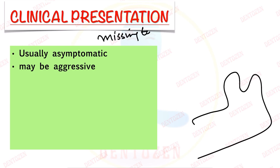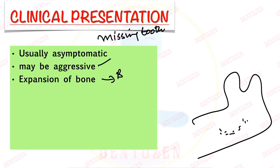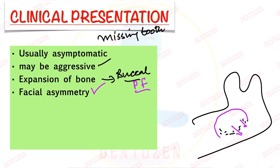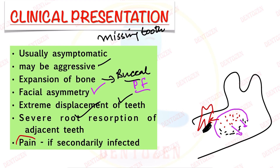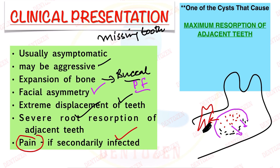Clinically it is usually asymptomatic. The patient comes with concern about a missing tooth, and the cyst is discovered on radiograph. However, it has the potential to become aggressive — it grows slowly, expands bone laterally, expands the buccal cortical plate, and can lead to pathological fracture. It can cause facial asymmetry, extreme displacement of adjacent teeth, and severe root resorption. If secondarily infected, it can become painful.